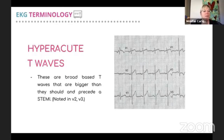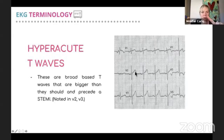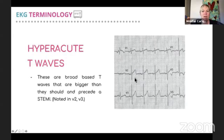When it comes to T-waves, if they're ever big, there are two things we need to think about. Number one is hyperkalemia, and number two is hyper-acute T-waves. These are an example of hyper-acute T-waves — if they're super big, they are hyper-acute.